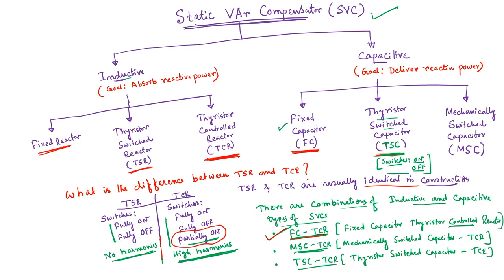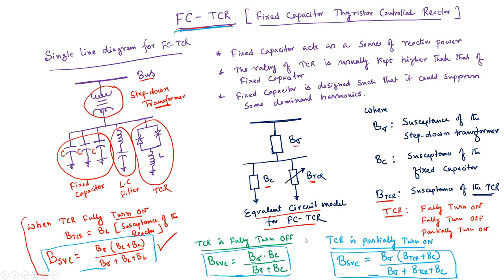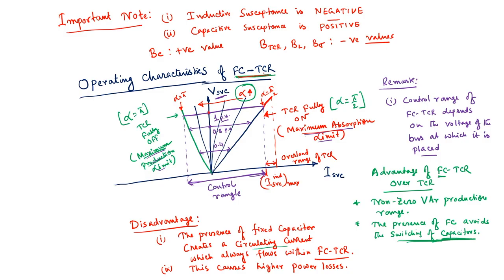The advantage of FC-TCR over normal TCR is that since we have a fixed capacitor bank, we have the flexibility of both reactive power delivery and reactive power consumption. The VI characteristics of fixed capacitor TCR have a non-zero production limit, whereas normal TCR had a zero production limit. But the disadvantage of having this fixed capacitor is that there will be a circulating current which will always flow between the fixed capacitor and the TCR when they are operating, resulting in additional losses.